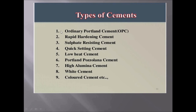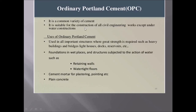There are different types of cements: Ordinary Portland Cement, Rapid Hardening Cement, Sulfate Resisting Cement, Quick Setting Cement, Low Heat Cement, Portland Pozzolana Cement, High Alumina Cement, White Cement, and Colored Cement. Ordinary Portland Cement is a very common variety suitable for civil engineering works except underwater constructions. It is used in all important structures where great strength is required, such as heavy buildings and bridges, foundations in wet places, structures subjected to the action of water such as retaining walls and watertight doors, cement mortar for plastering and pointing, and for preparation of plain concrete.